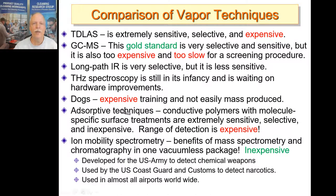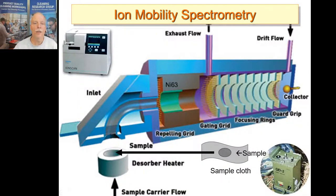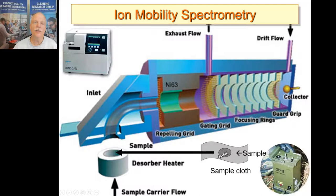Ion mobility spectrometry has the benefits of mass spectrometry and chromatography and is inexpensive. It was developed for the U.S. Army to detect chemical weapons, used by the Coast Guard to detect narcotics, and is now used in almost all airports worldwide. If you've been to the airport, you've seen them wipe down your luggage with a sample cloth and put it in the instrument. They press it down into a desorber that heats up that spot — if there are any volatile explosives on the cloth rubbed off your luggage, hands, or shoes, they go into the instrument's inlet and are ionized in the ionization cell.